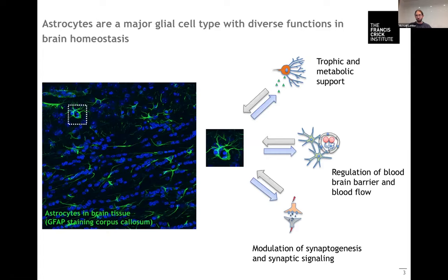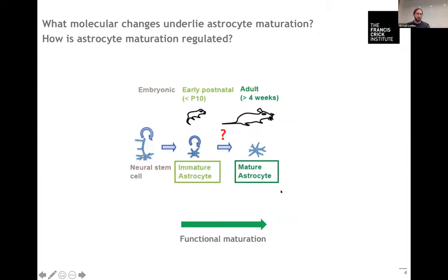These different functions are for example support for neurons with trophic and metabolic factors, regulating the blood-brain barrier and cerebral blood flow, and they're also involved in modulating the signaling between neurons by controlling synaptogenesis and neurotransmitter signaling. But it's not very clear so far how these different functions are established during normal brain development.